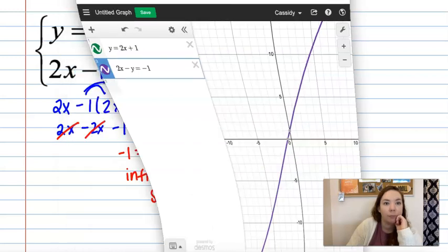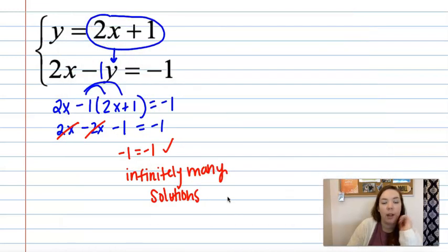All right. And so at this point you do have a delta math assignment to work on. You'll have five where it'll just ask you. Do you have one, no solution or infinitely many solutions.